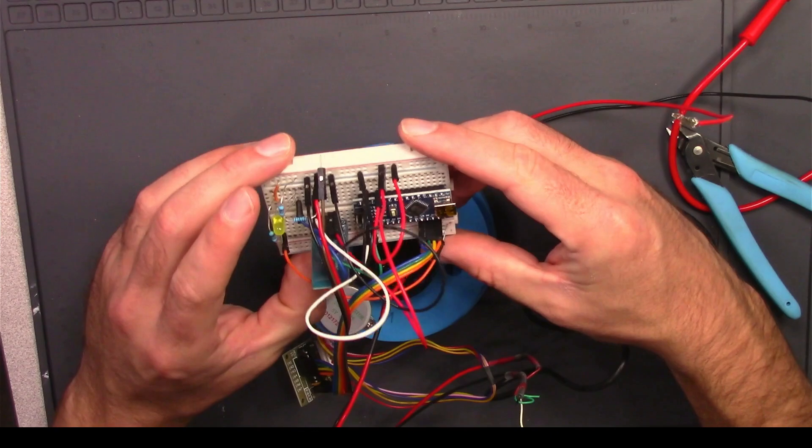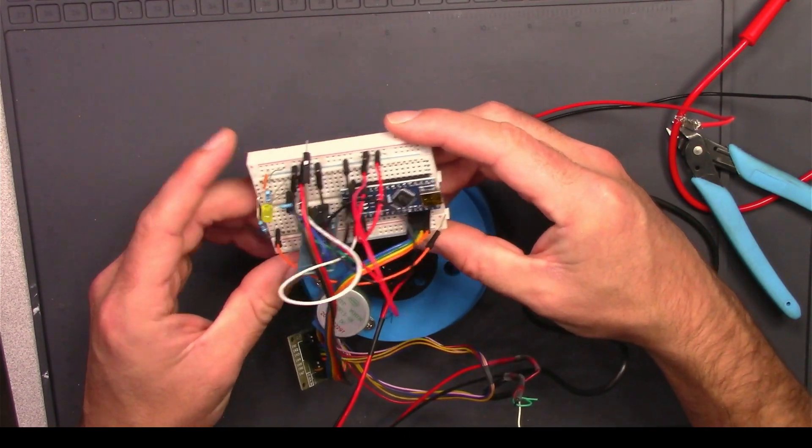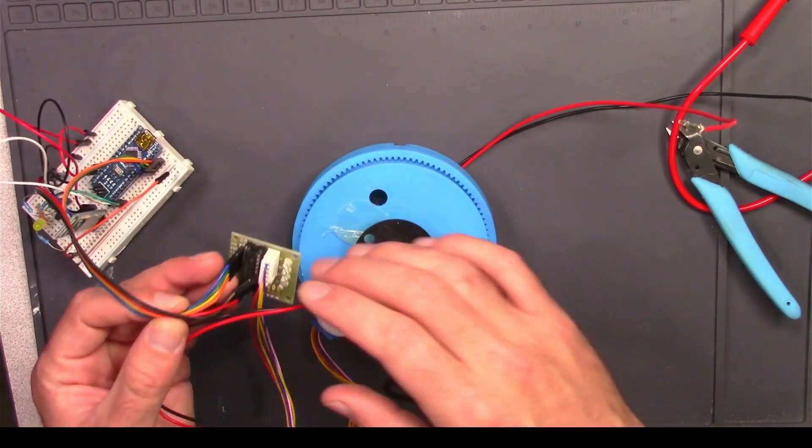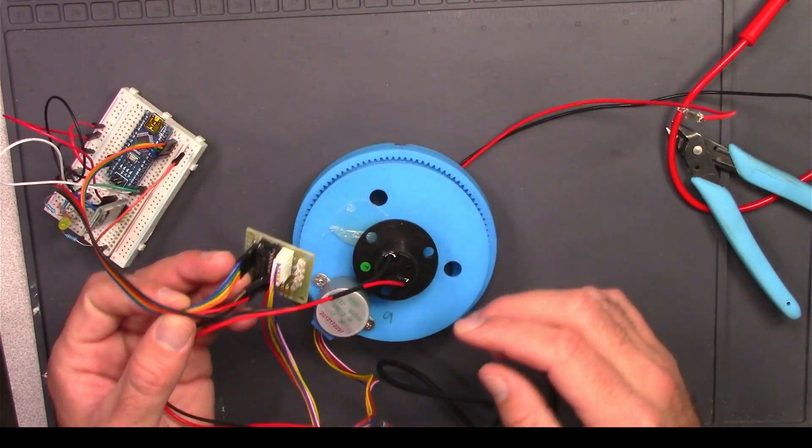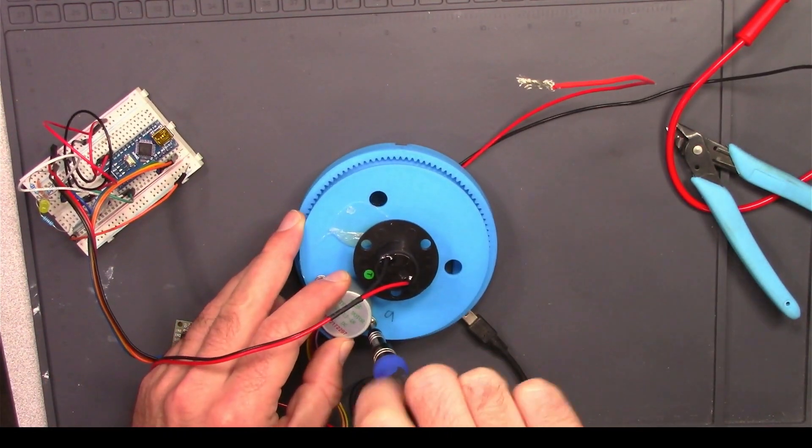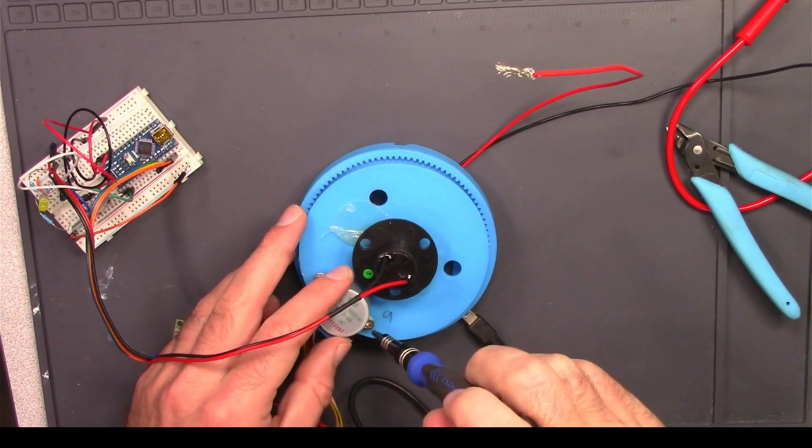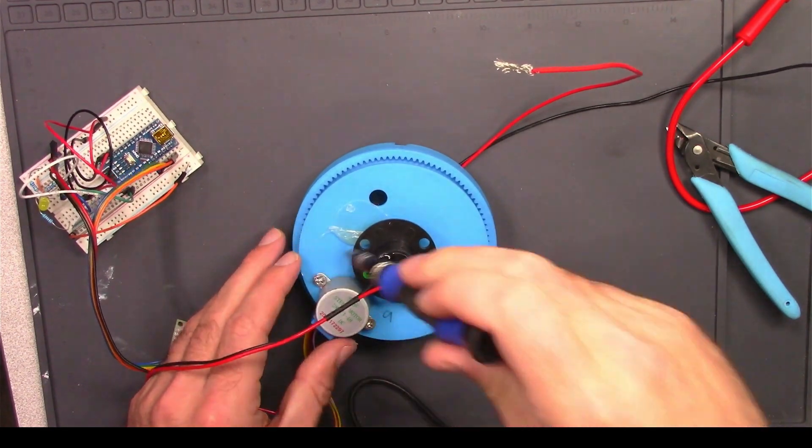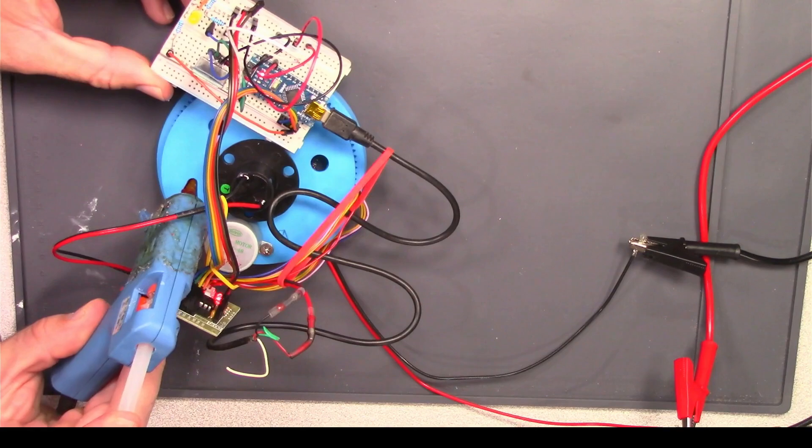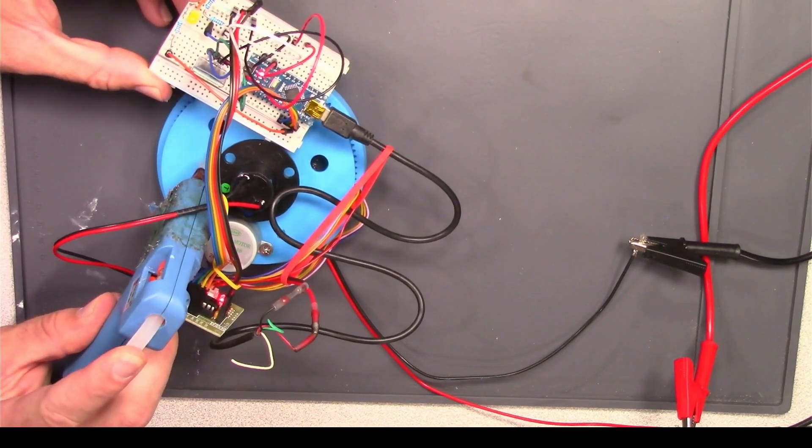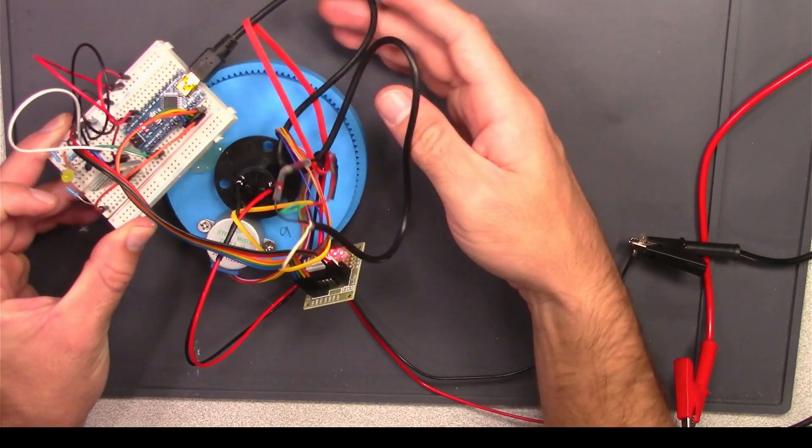Here's the Arduino and Bluetooth chip board from last week. This is the stepper motor controller. The stepper motor is just held on by two screws. This breadboard keeps moving around. I'm just going to add some hot glue right here and stick it on.